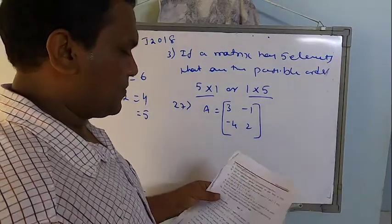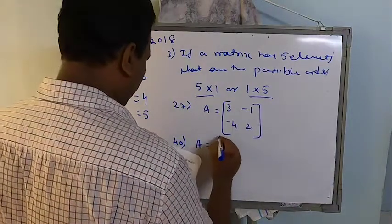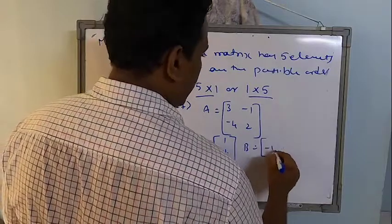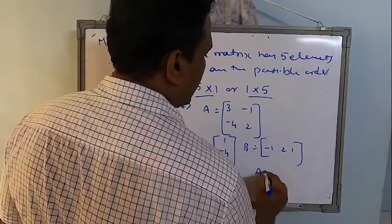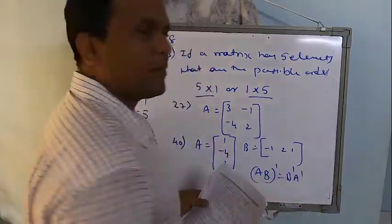Then for 5 marks, let me show you what problems are given. A simple column: 1, minus 4, 3. And matrix B is minus 1, 2, 1. Then show that AB the whole transpose is equal to B transpose multiplied by A transpose.